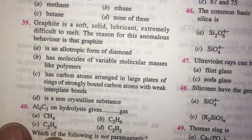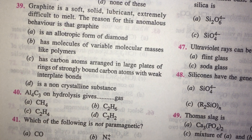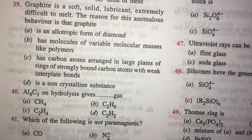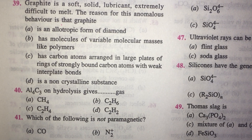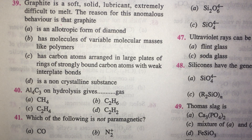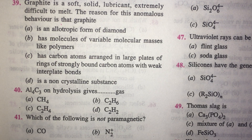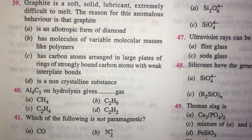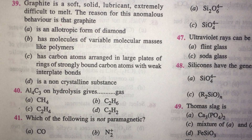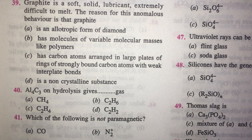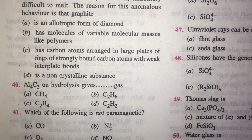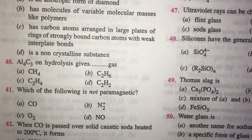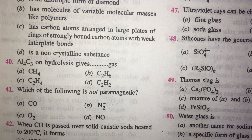Graphite is a soft solid lubricant, yet it is extensively difficult to melt. The reason for this anomalous behavior is that carbon atoms are arranged in large plates of rings of strongly bound carbon atoms with weak inter-plate forces. The forces between layers are weak, but within the layer they are strong; therefore, one layer can slip over the other. So C is the more correct answer. Aluminum carbide on hydrolysis gives methane, like beryllium carbide — so they are called methanides.